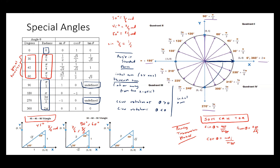This is a special type of circle called a unit circle — a circle where the radius is one unit. All of these terminal arm lengths are just one unit. Because the radius is one, the key points are: (1, 0), (0, 1), (−1, 0), and (0, −1).